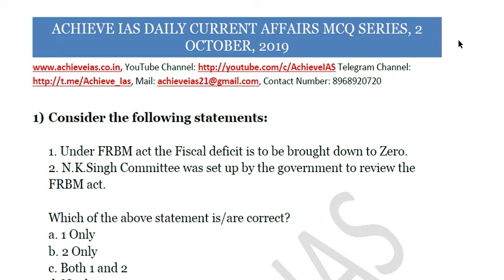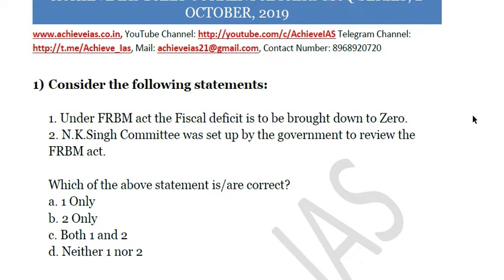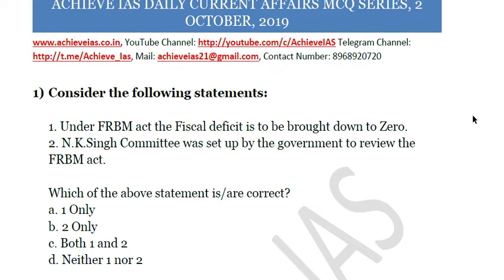Today is 2nd October, so let's see what the questions are for today. The first question is: consider the following statements. First, under the FRBM Act (Fiscal Responsibility and Budget Management Act), the fiscal deficit is to be brought down to zero. Second, the NK Singh Committee was set up by the government to review the FRBM Act. Which of the above statements is correct?